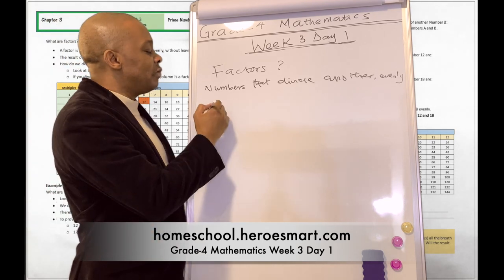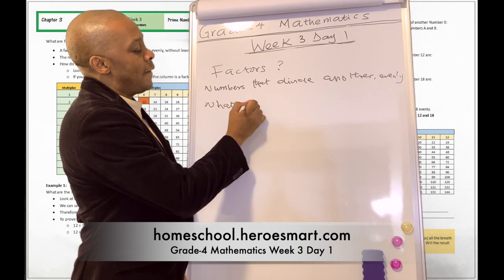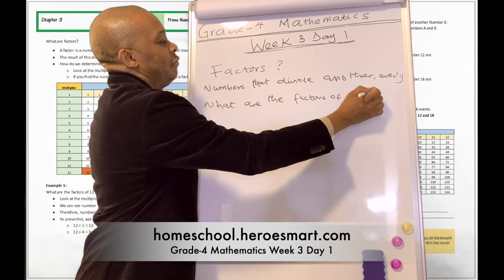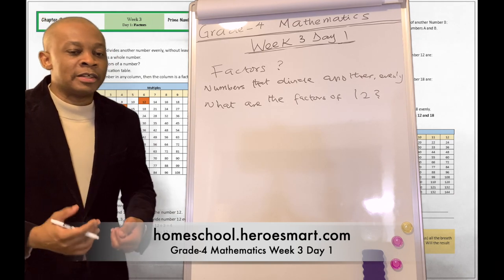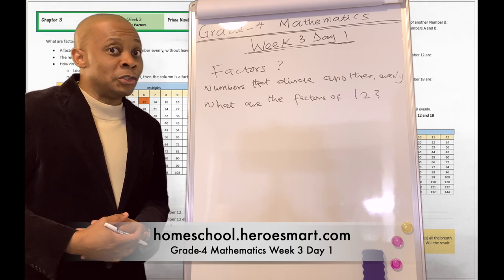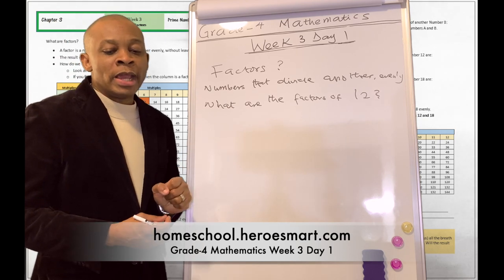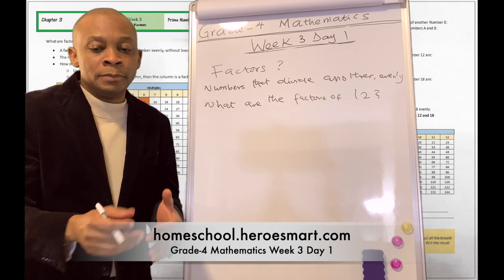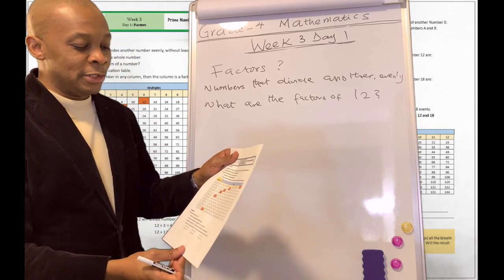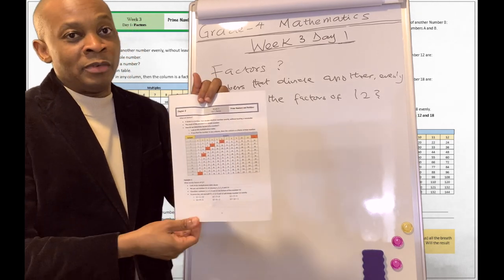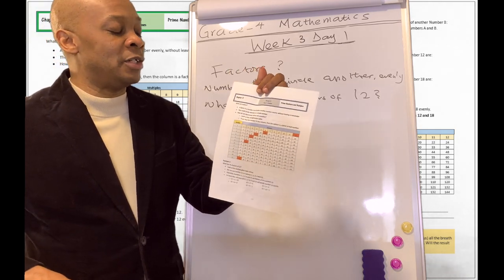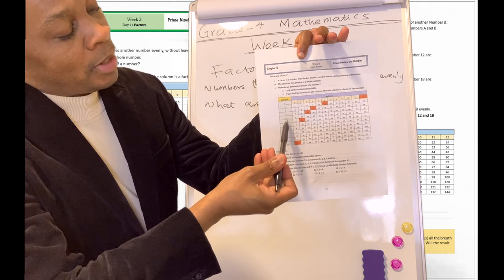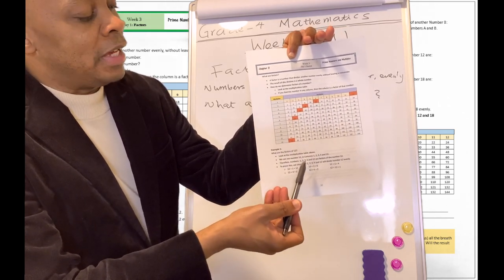So they can ask you a question like: what are the factors of number 12? You are going to ask yourself, from the multiplication table — which you should remember — what numbers, when I divide 12 by them, will give a whole number? The multiplication table is on page number 33 of your workbook. Which column can I find the number 12 in?